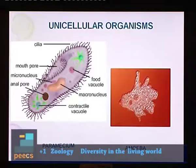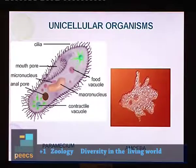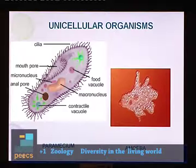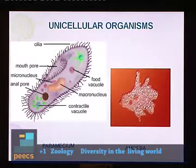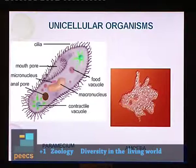The body of some organisms is made up of a single cell. Such organisms are called unicellular organisms. You can see two examples here: paramecium and amoeba. It has only one cell in its body. That is why we call these unicellular organisms.